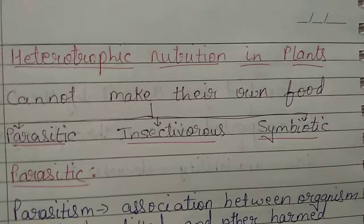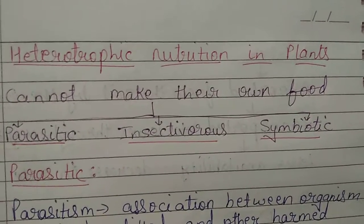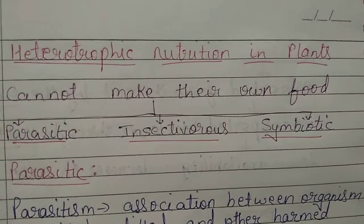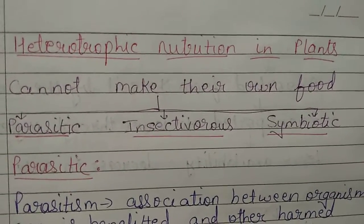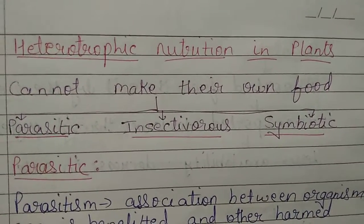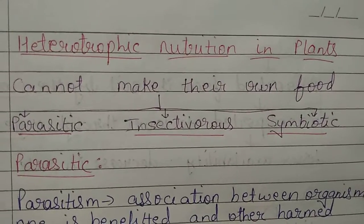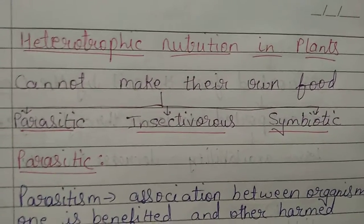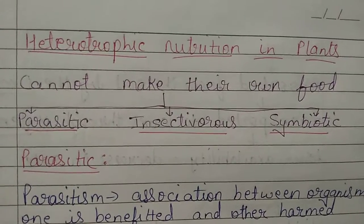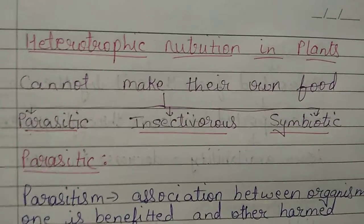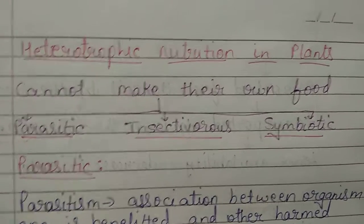Especially green plants synthesize their own food; they are autotrophic in nature. But there are some plants which are heterotrophic in nature, obtaining their nutrition through a heterotrophic way — they cannot synthesize or make their own food. These plants are further divided into three categories: parasitic, insectivorous, and symbiotic.